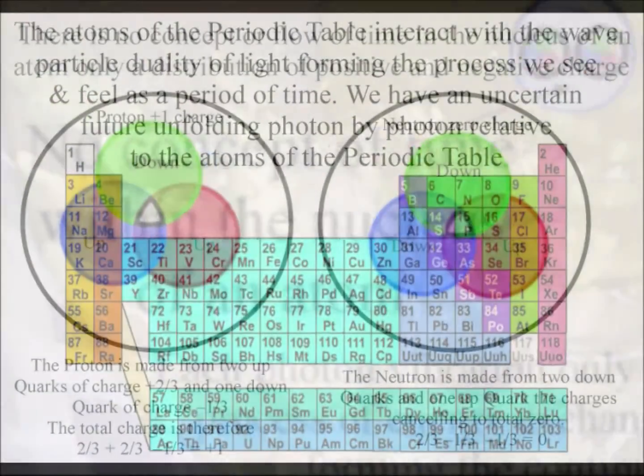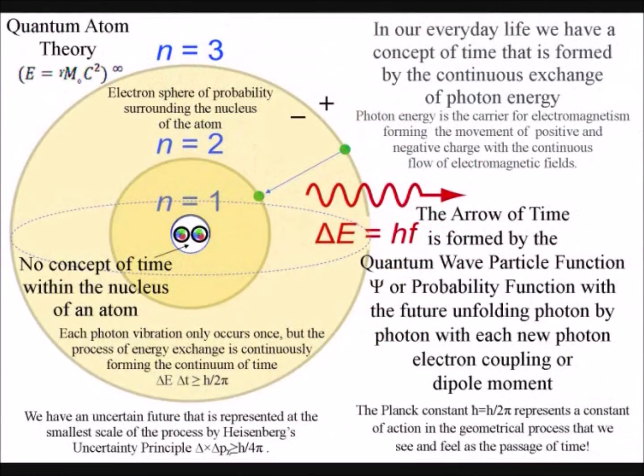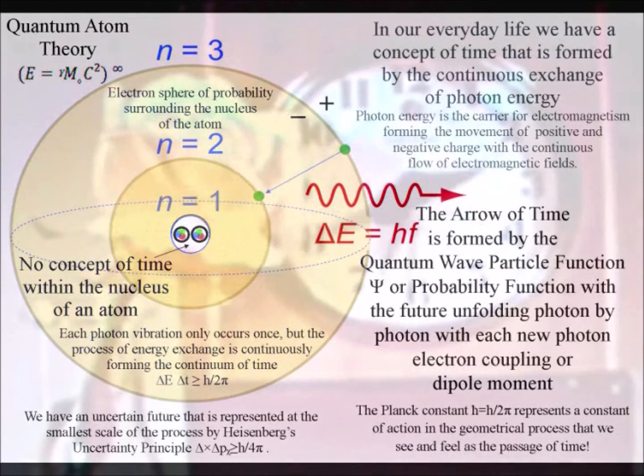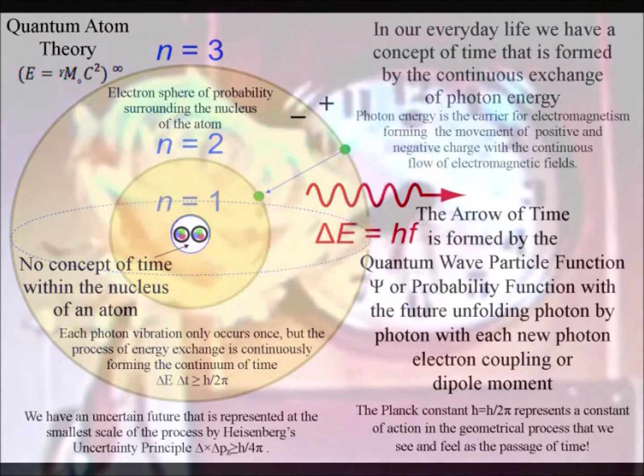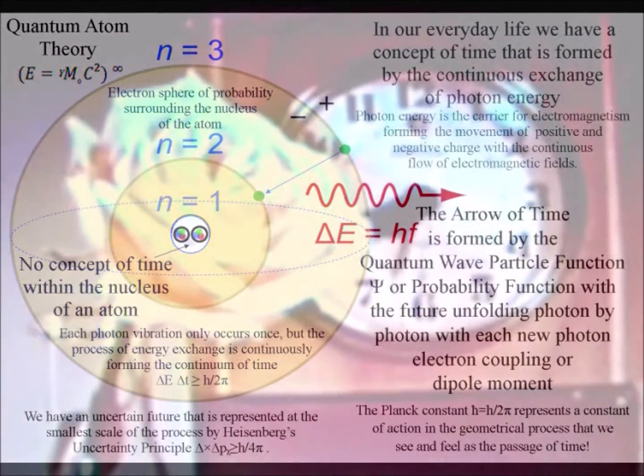Therefore the wave function is everywhere collapsing and reforming continuously. The way to have an intuitive logical explanation of what is happening is to think of the collapse of the wave function as a new moment in time that has the geometry of space-time.